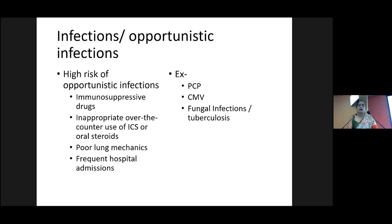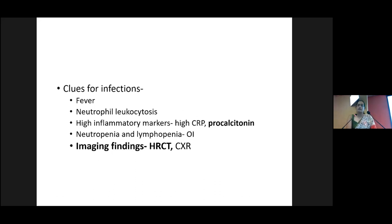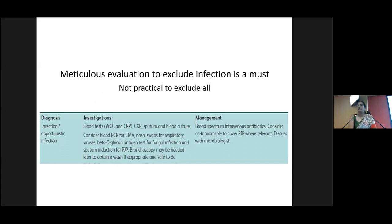Fever, neutrophil leukocytosis, lymphopenia, high CRP levels, and neutropenia will all suggest an underlying infection — but we must keep in mind these findings may also indicate the underlying inflammatory condition itself. Better clues would be characteristic imaging features and procalcitonin. It's very important to take all necessary action to exclude infections in patients admitted with acute worsening in the background of ILD, since they are at high risk at the beginning, and at the end we might need to pulse them with steroids.